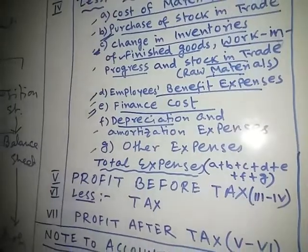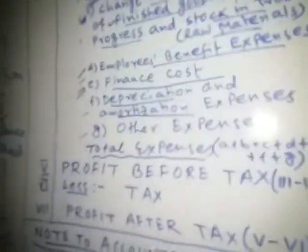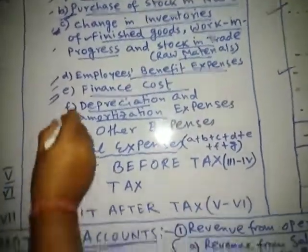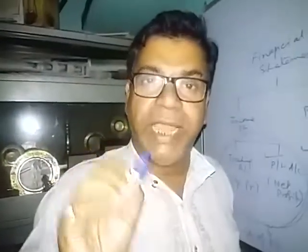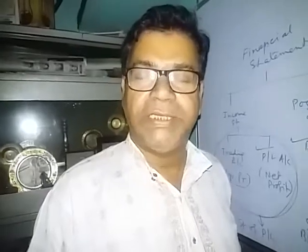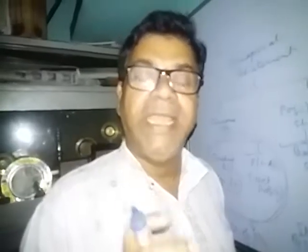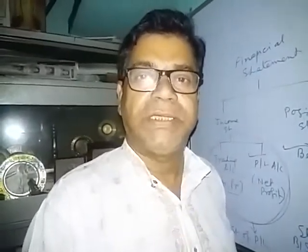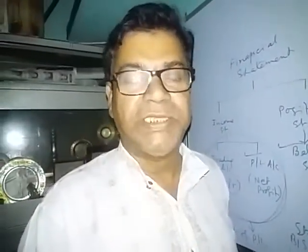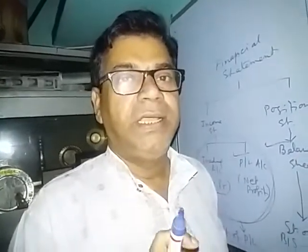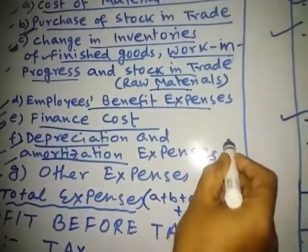Depreciation is debited to the P&L account and is also an expense. Depreciation and amortization are essentially the same thing, but depreciation applies to tangible fixed assets such as machinery, furniture, and buildings — it is the decrease in their value. Amortization applies to intangible assets such as goodwill and patents — it is the decrease in the value of intangible fixed assets.